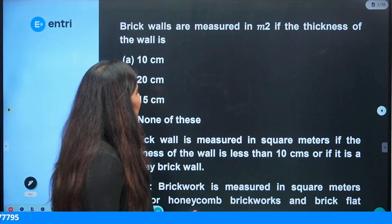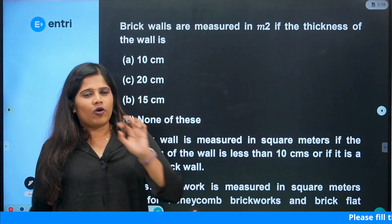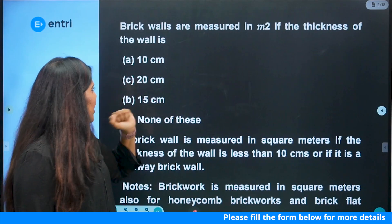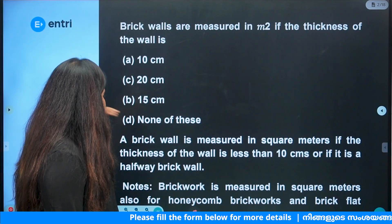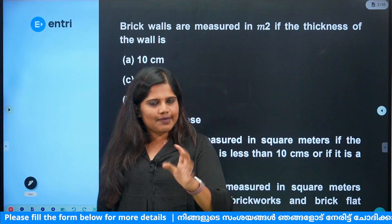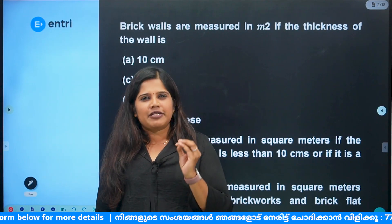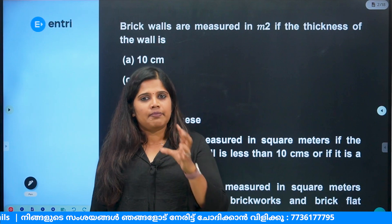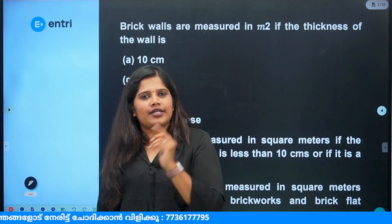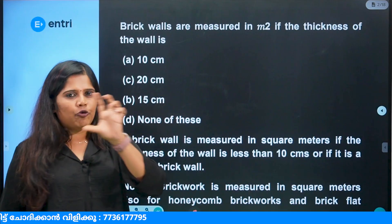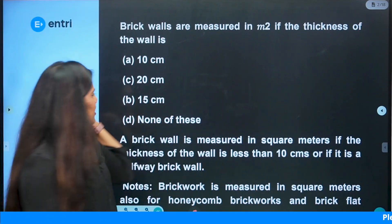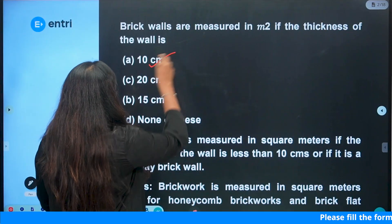Brick walls are measured in meter square if the thickness of the wall is less than a full brick. Wall thickness: 10cm, 20cm, 15cm — which one? Normally, a brick wall is 20cm, so if we use 20cm we measure the unit in meter cube. In exceptional cases it is meter square — that is a half brick. One brick is 20cm, half brick is 10cm. So the answer is 10cm.